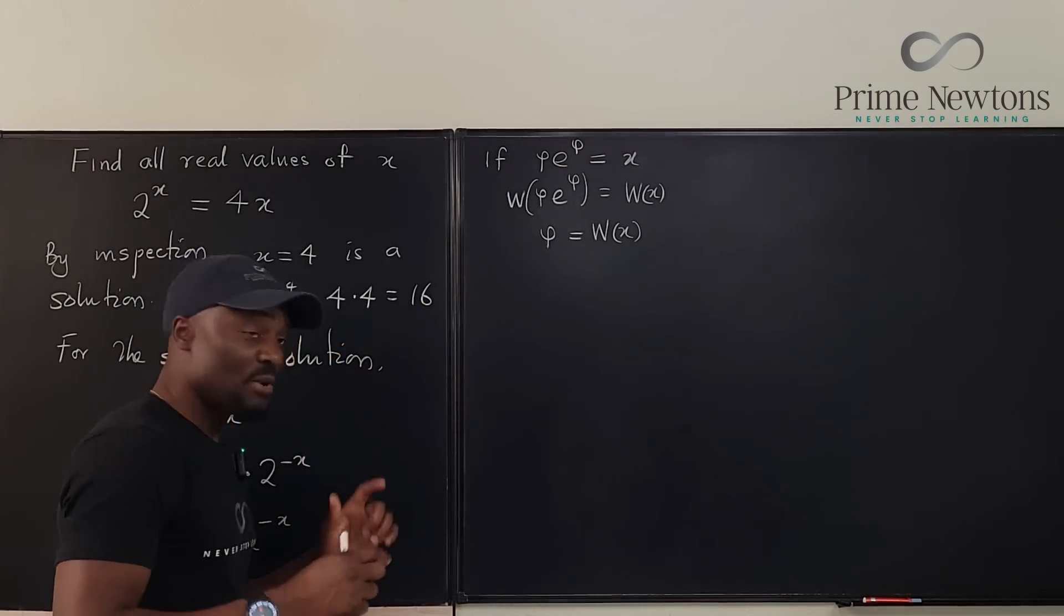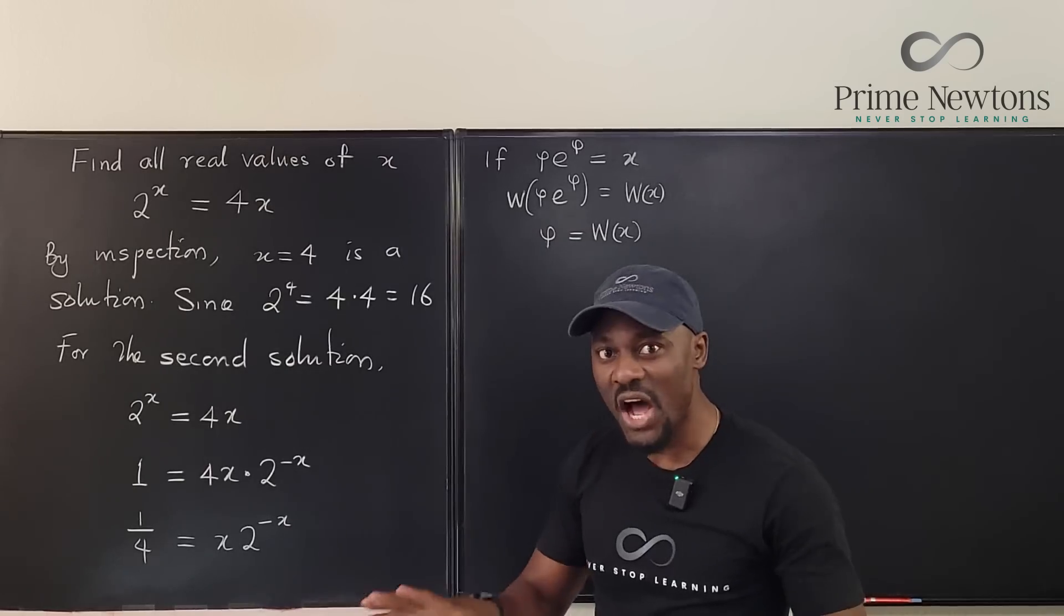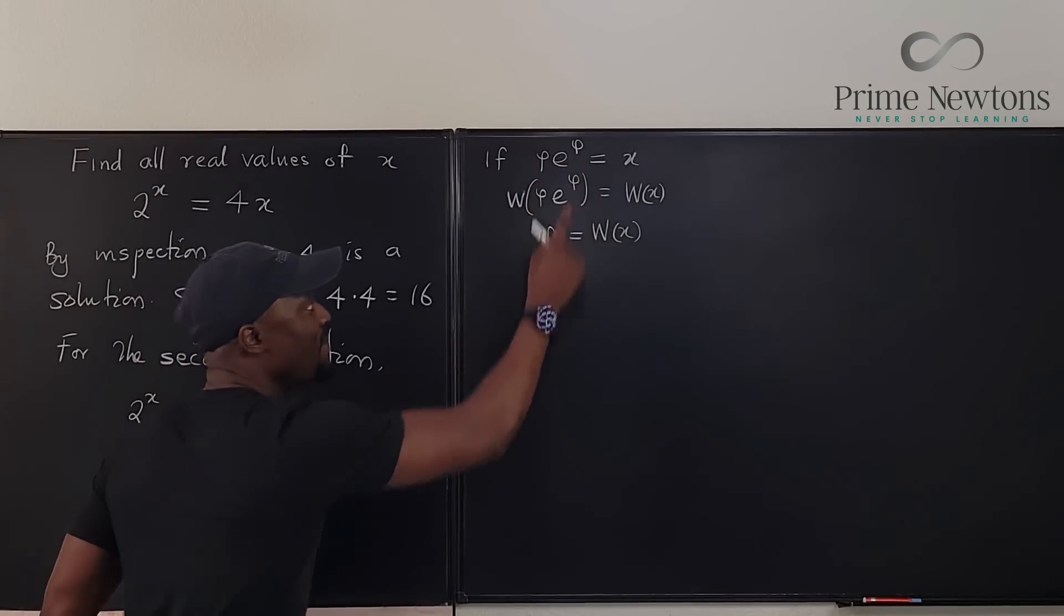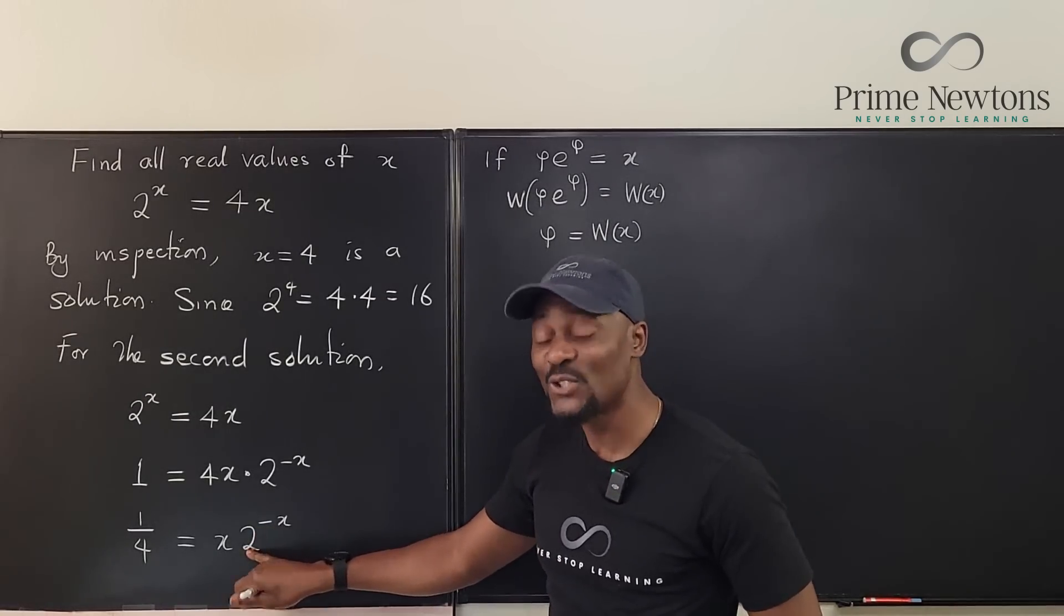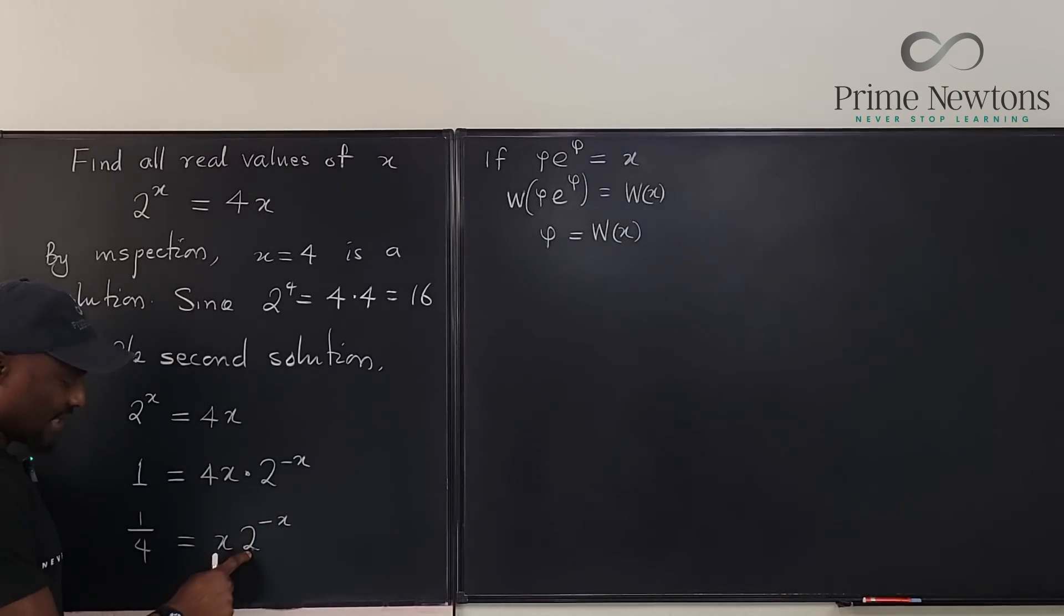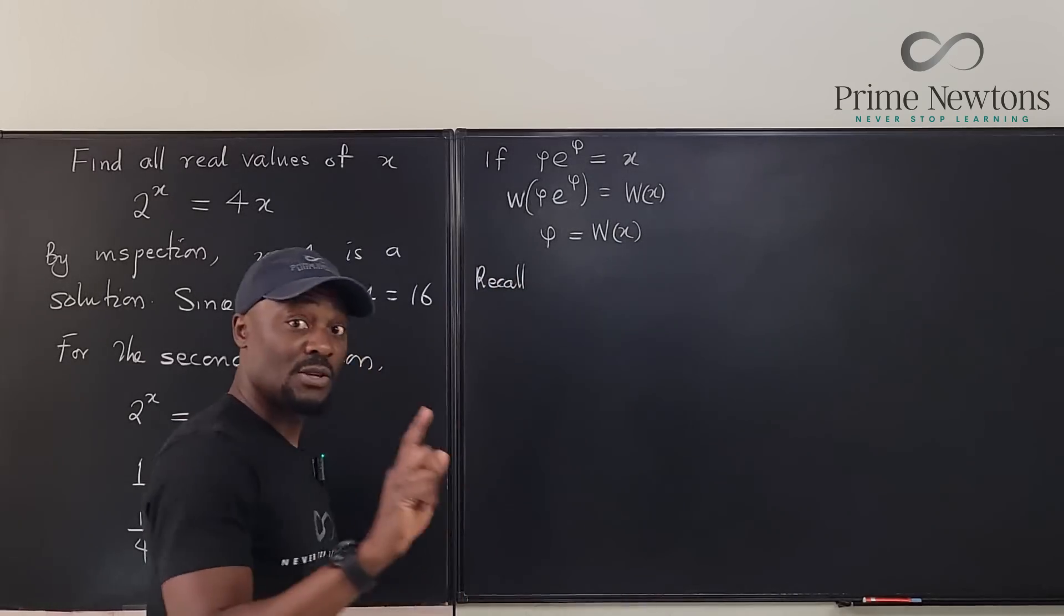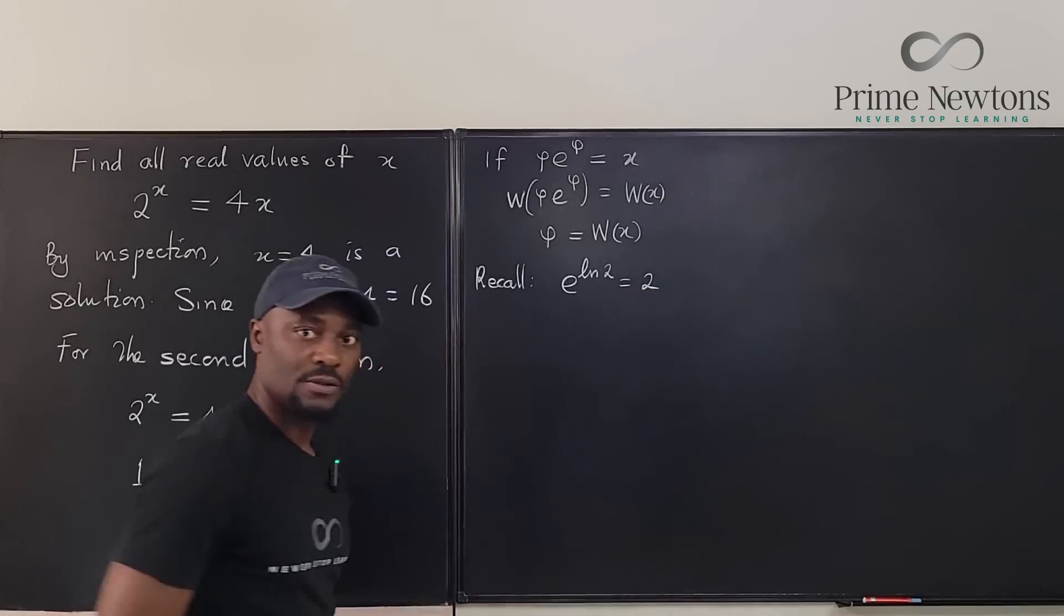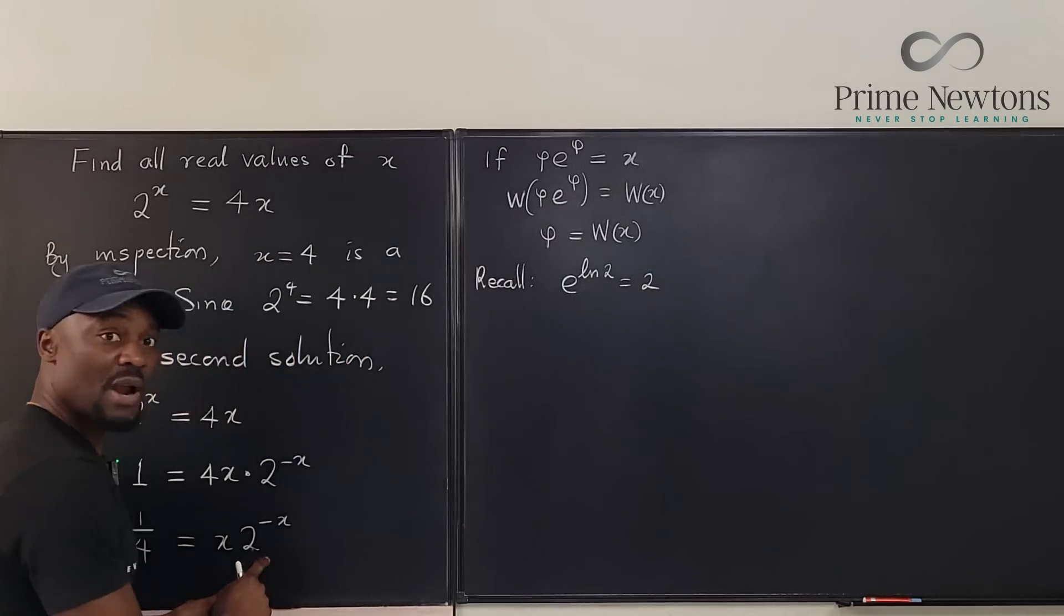The problem we have is we have x times 2 to the negative x. It has not taken the form that we wanted to take. It has to be the form that what is here is exactly what is here and what is in the middle is e. Here, what is here is not exactly what is here and the middle is not e. So we have to fix all of that. The first thing we want to fix is make sure that this is e. We want to change this 2 to be a form of e. Recall that e to the ln of 2 is equal to 2.